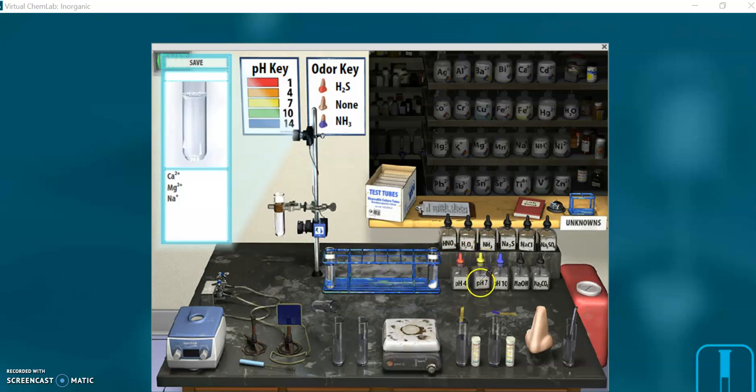So first, I'm going to go over to the pH 7 bottle. Click on that. You can hear that it does something. I can test it with the pH paper if I want to show that it's 7. If I do, it should look yellow here.